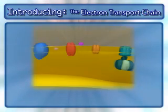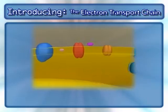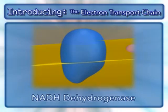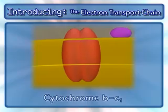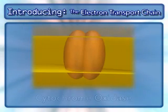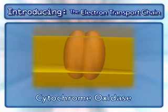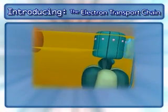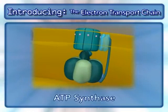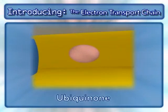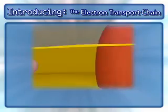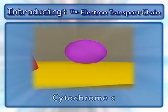The following complexes are found in the electron transport chain: NADH dehydrogenase, cytochrome BC1, cytochrome oxidase, and the complex that makes ATP — ATP synthase. In addition to these complexes, two mobile carriers are also involved: ubiquinone and cytochrome C.